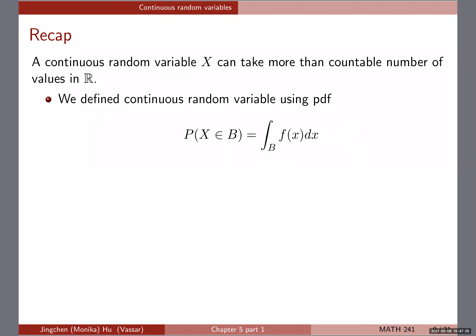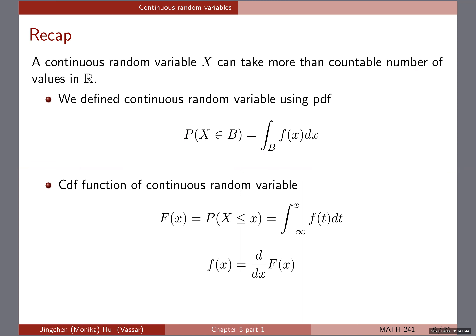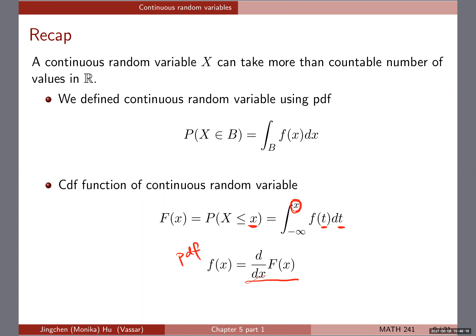To recap: a continuous random variable can take more than a countable number of values on the real line. We define it using the PDF f(x), where integrating over a particular range gives the probability of X being in that range. The CDF uses integration from the lowest possible value up to a given point, instead of summation. Between the PDF and CDF: integrating the PDF gives the CDF, and taking the first-order derivative of the CDF gives the PDF. Note that sometimes a dummy variable is used in the CDF definition to avoid confusion with the specific value x we're evaluating at.